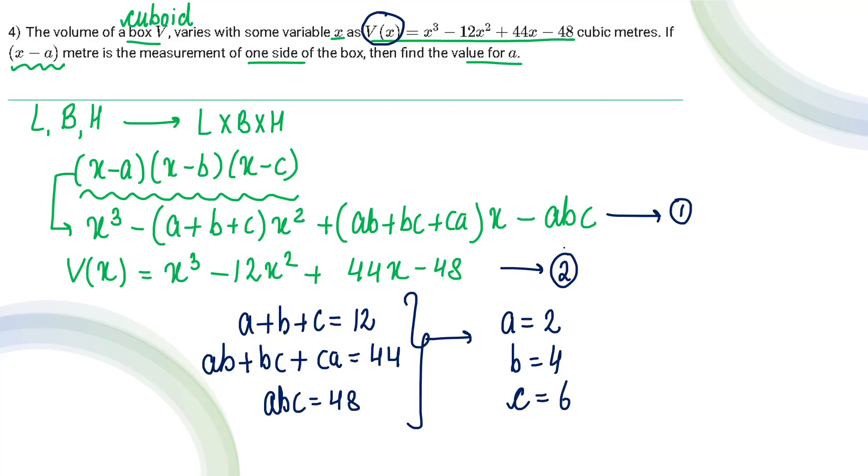Though it has not been given that x minus a are we talking about length or breadth or height. So obviously we can have multiple combinations. So a can also take a value of 4 and it can also take a value of 6. So the answer can be 2, 4, or 6. All three are correct.